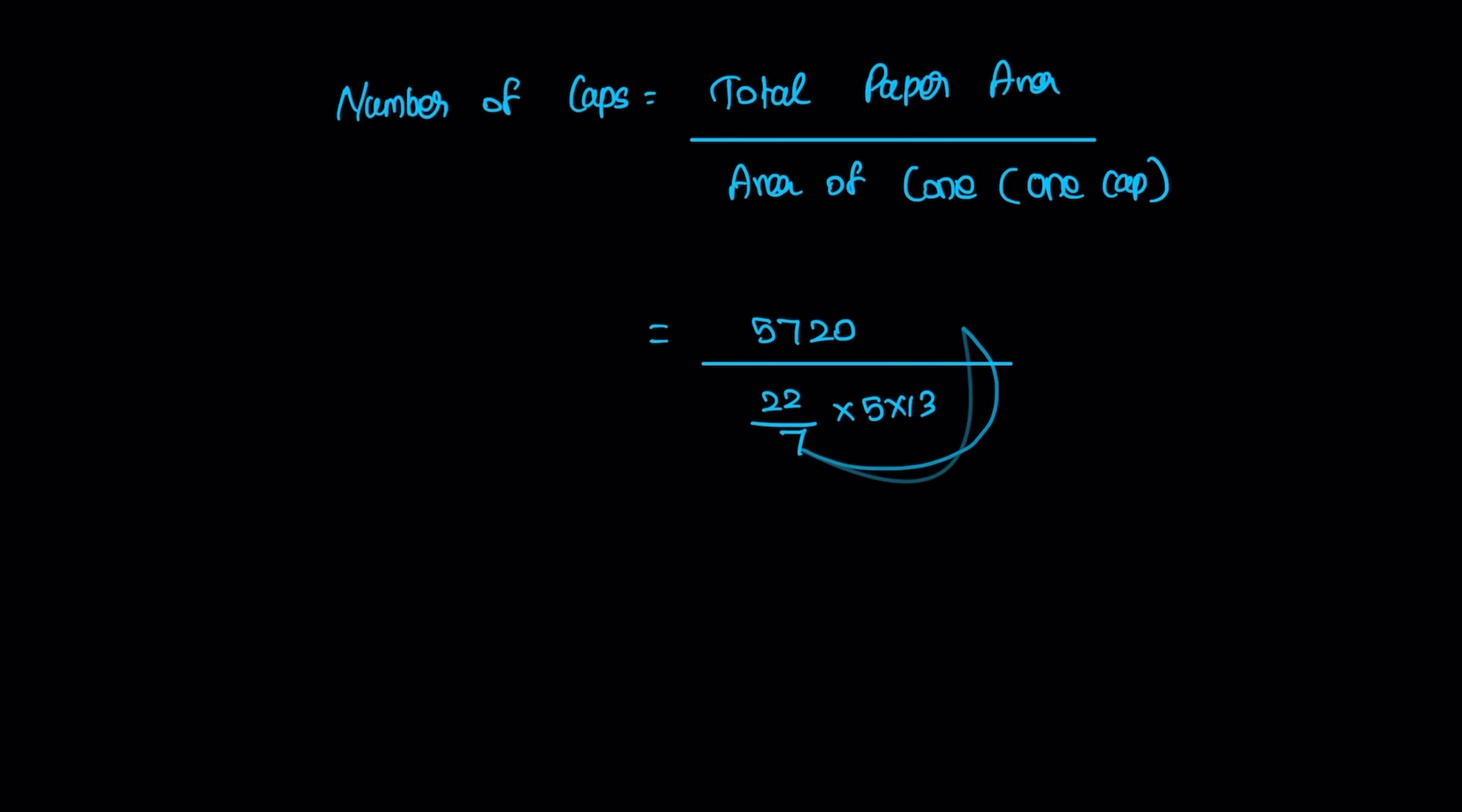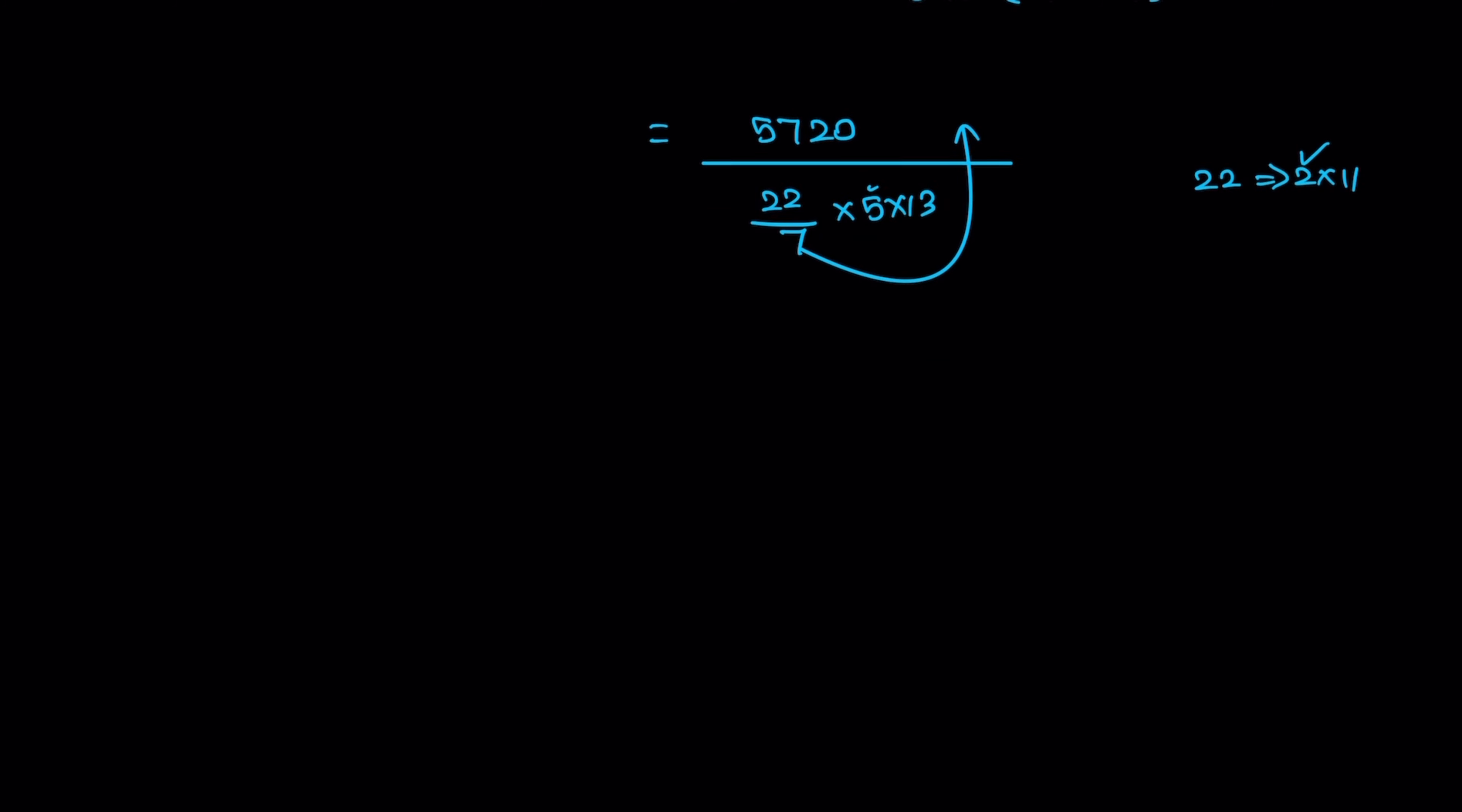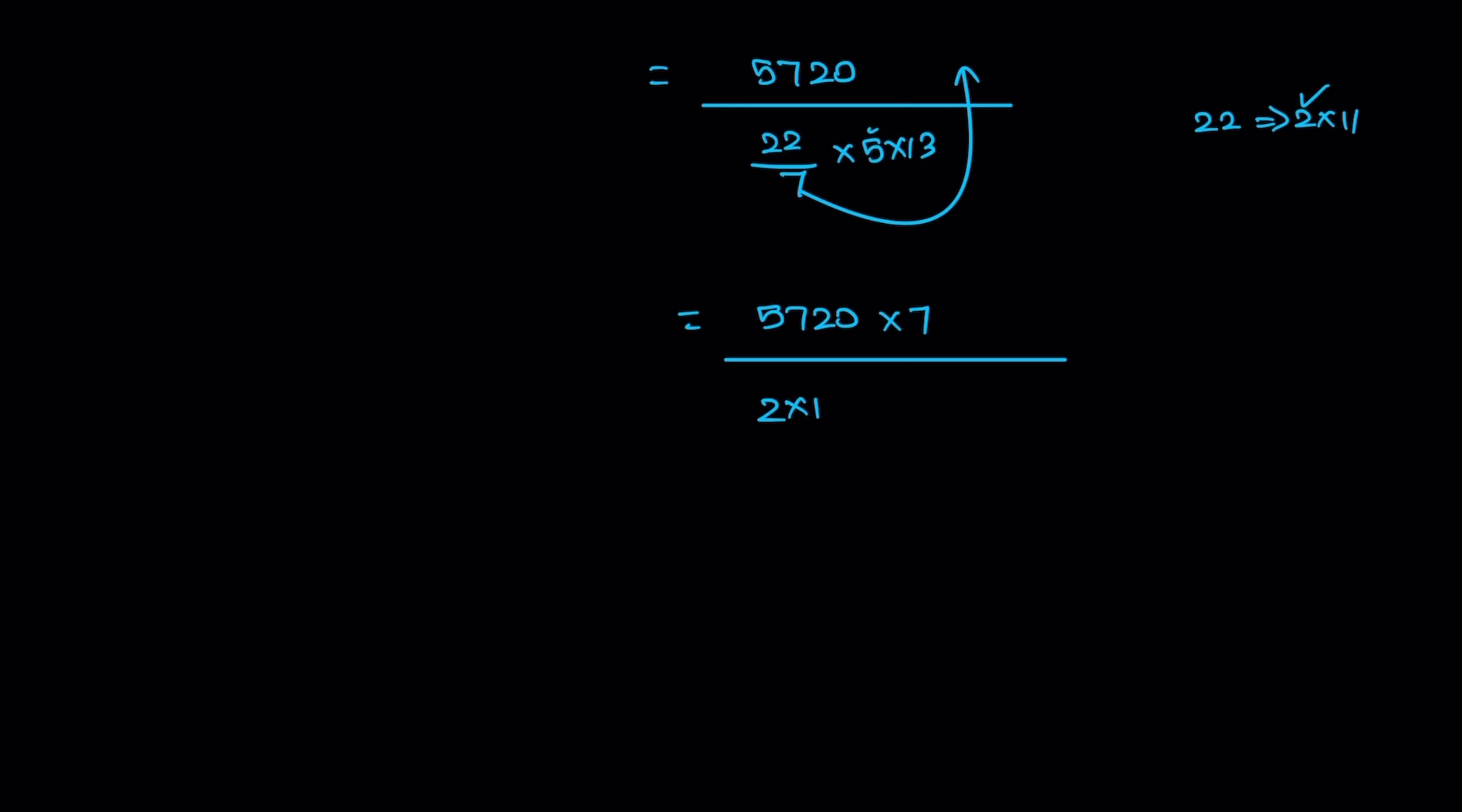Now 7 is going to move to the numerator. That means 5720 times 7 divided by 22 times 5 times 13. The numbers 2, 5, and 0 cancel. We get 572 times 7 divided by 11 times 13.